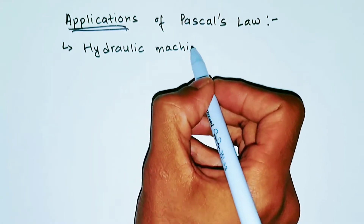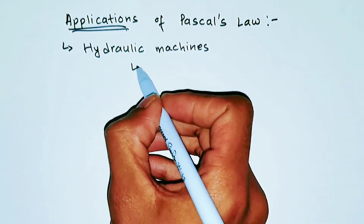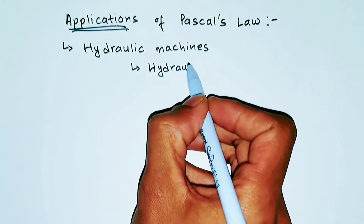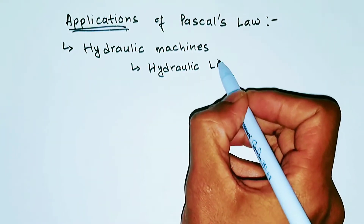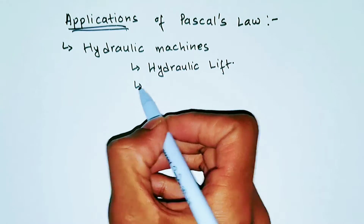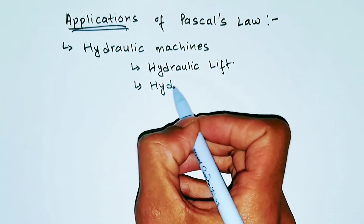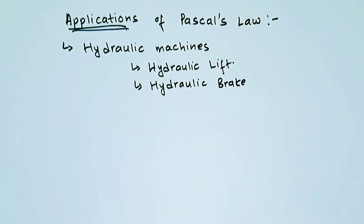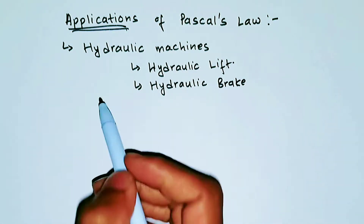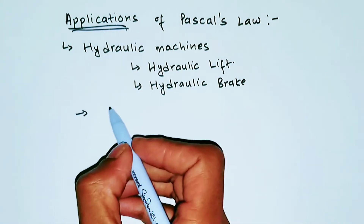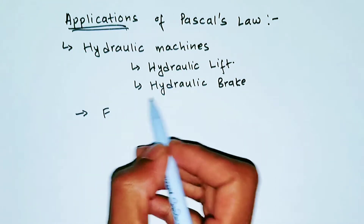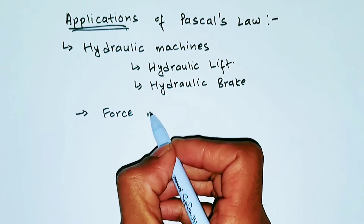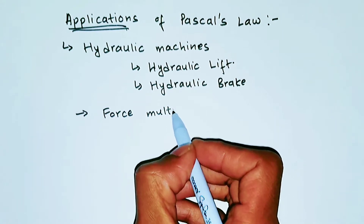So in hydraulic machines, we have hydraulic lift, hydraulic press, and hydraulic brakes in your car. How do these machines work? What these machines do is they act as a force multiplying machine. So they help to multiply force — they act as force multipliers.